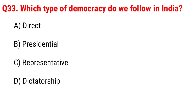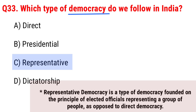Next question: which type of democracy do we follow in India? It is a very important question, friends. Option A, direct; B, presidential; C, representative; D, dictatorship. The right answer is Option C, representative. Representative democracy is a type of democracy founded on the principle of elected officials representing a group of people, as opposed to direct democracy.